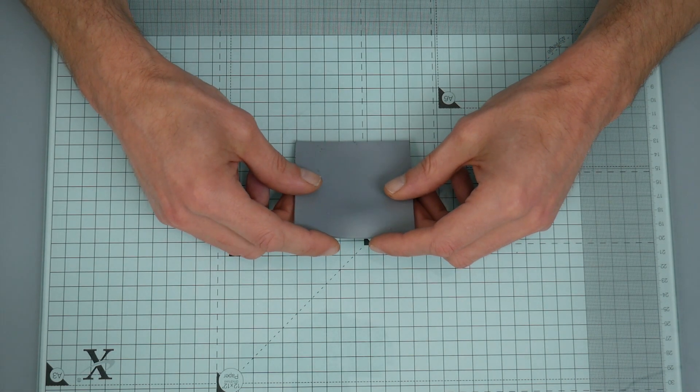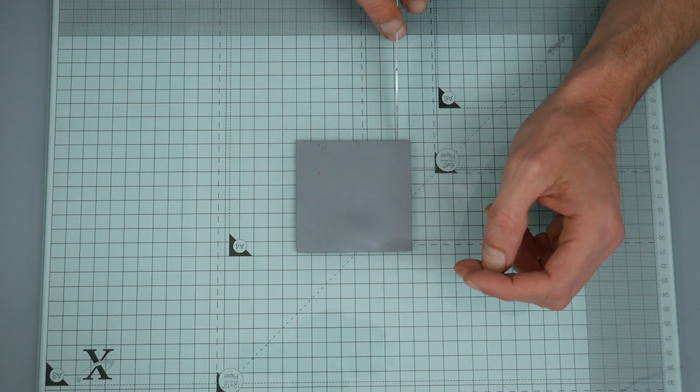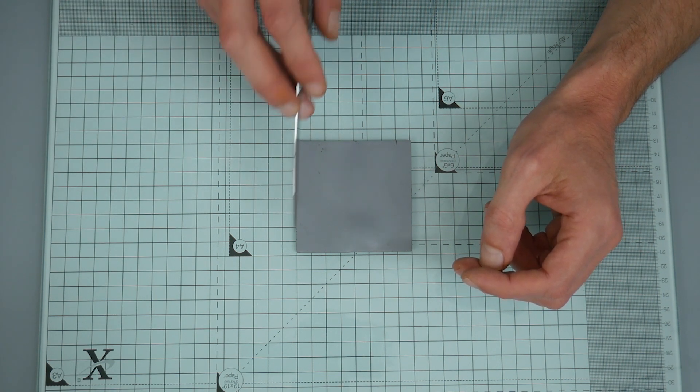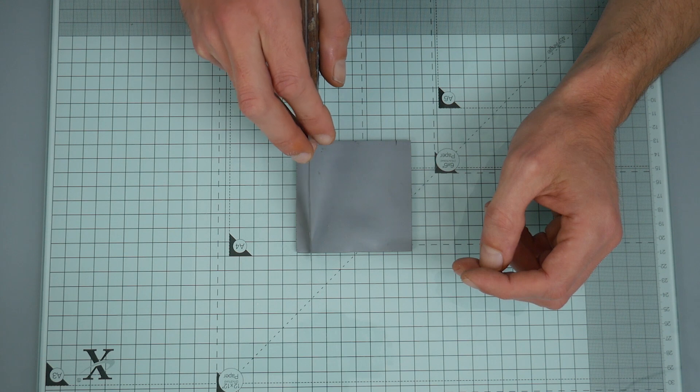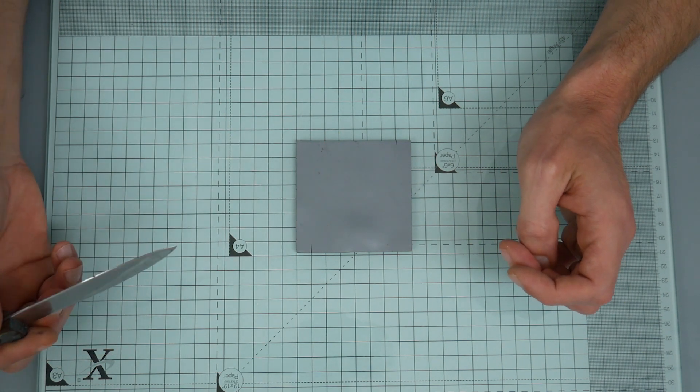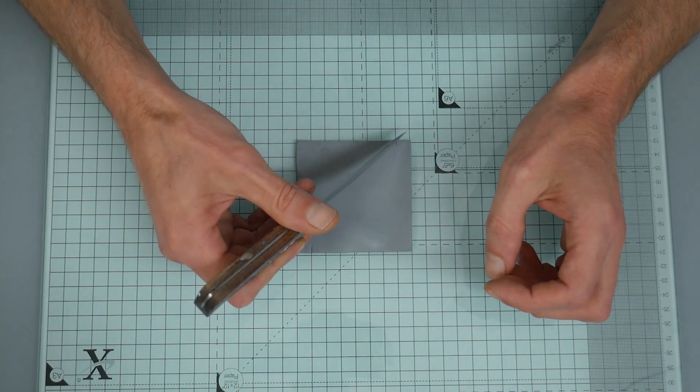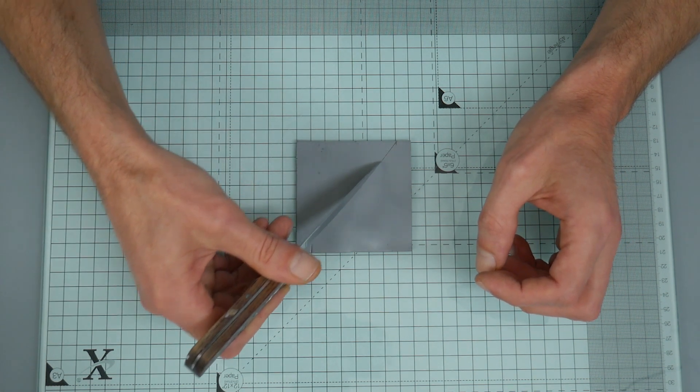So we will start with this light gray square and we need to make two Skinner blends. If you don't know what a Skinner blend is, I'll put a link in the comments below to a tutorial by Polyoriginals. I really like her tutorials and she'll give you all the tricks you need to know to make a good Skinner blend.